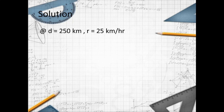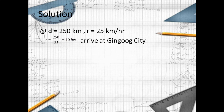At distance equals 250 kilometers and rate equals 25 kilometers per hour, T equals 250 over 25, which equals 10 hours. So you would arrive at the destination in 10 hours.